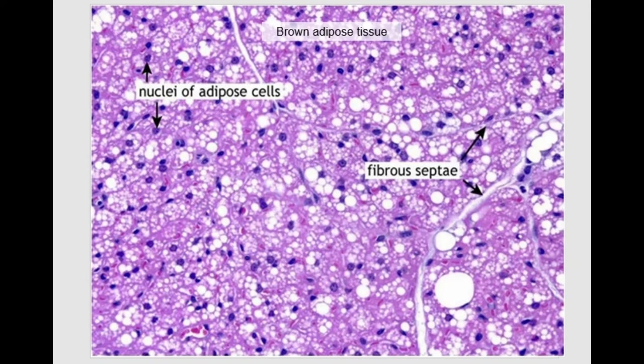Brown adipose cells contain many small lipid droplets in the cytoplasm and a large number of mitochondria. Brown adipose tissue is present in newborns, on the back and cheeks, and in adults it is usually absent — present only in people living in very cold climates. White adipose tissue functions in energy storage, thermal isolation, and mechanical protection. Brown adipose tissue functions in energy production.